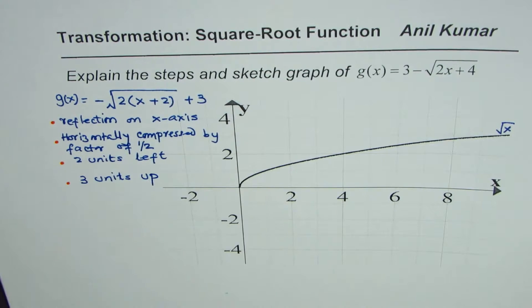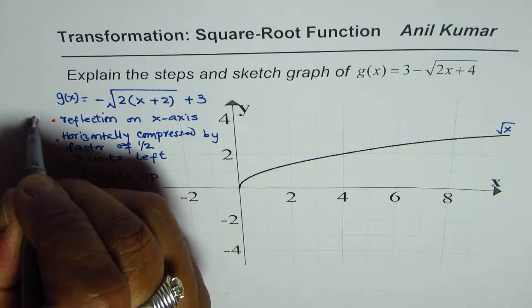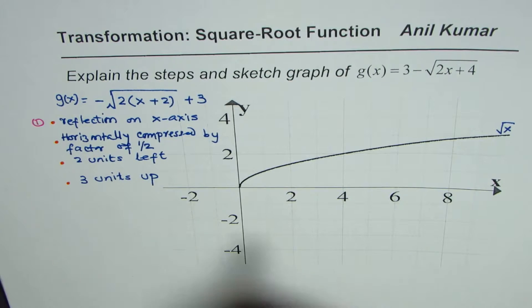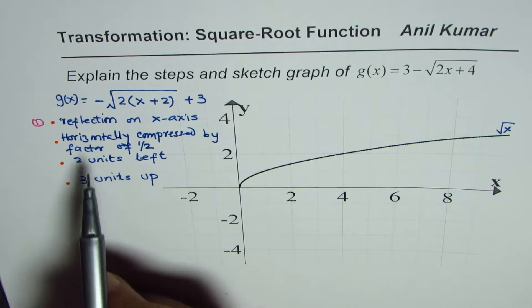These are the transformations. Now whenever you sketch the transformations, we should do multiplication parts first. So in first step I will do reflection on the x-axis, and then second step we'll use a different color and then do horizontal compression.